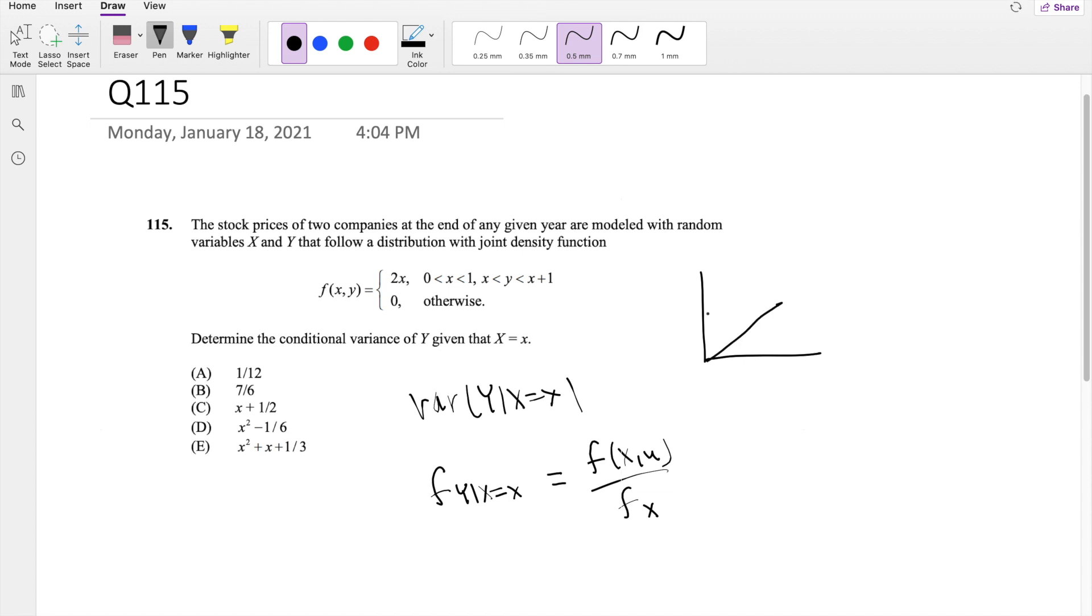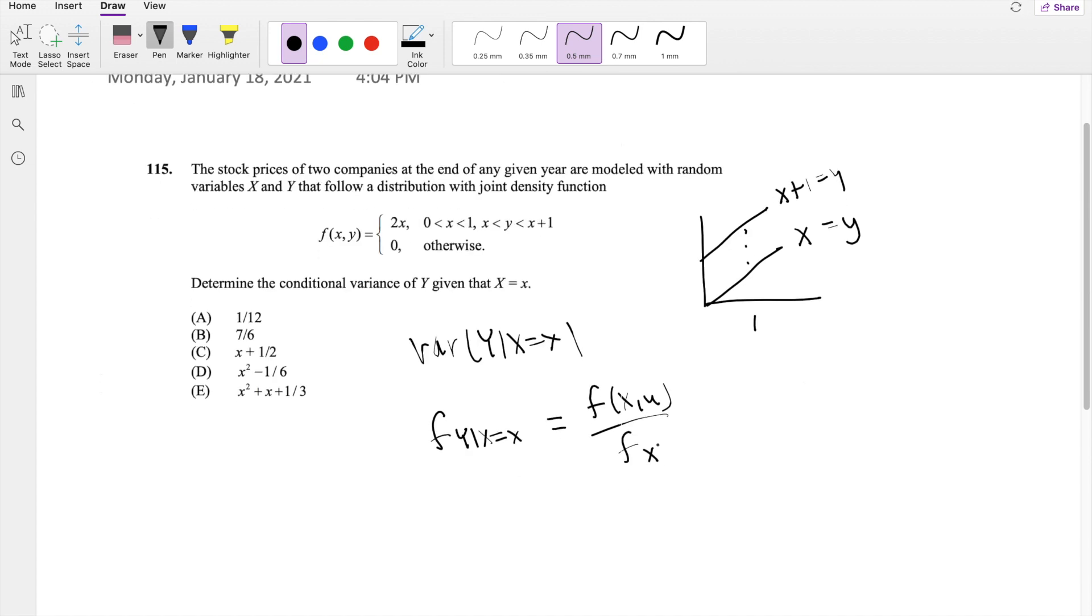Y is bounded by X and X plus 1. So this is X and this is X plus 1 equals Y. And it's going from 0 to 1. So let's say that's 1. Beautiful. And then we know f(X,Y), that's just given here, just 2X.